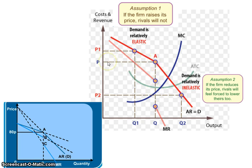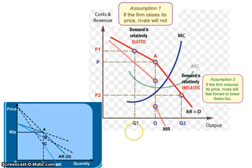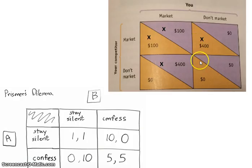So MR equals MC — you take it up to the demand curve and that gives you the price they would charge. Where MR equals MC gives you the quantity they would produce at. That is truly the only thing you need to worry about with this kinked demand curve: knowing what it looks like, that you still go where MR equals MC, take it up to the demand curve, and that gives you the equilibrium price, while this is the equilibrium quantity. You're not expected to be able to draw this on your own — it's more about being able to read a graph and figure out price and quantity. This graph exists because of the payoff matrix we saw in the last slide — this is what it would look like if it were graphed out.